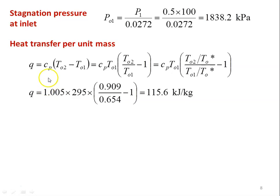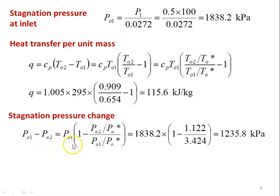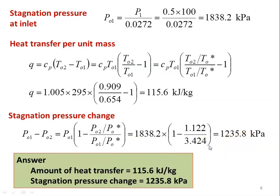Heat transfer per unit mass Q = Cp × (T02 − T01) = Cp × T01 × (T02/T0* / T01/T0* − 1). Substituting: Q = 1.005 × 295 × (0.909/0.654 − 1) = 115.6 kJ/kg. The stagnation pressure change: P01 − P02 = P01 × (1 − P02/P0* / P01/P0*) = 1838.2 × (1 − 1.122/3.424) = 1235.8 kPa.